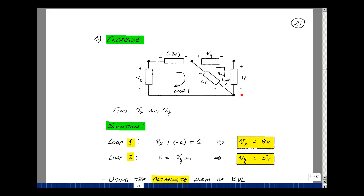Over on this loop, I know, again, two of the three. I have a drop of v sub y, a drop of 1, and a rise of 6. So 6 would be v_y plus 1. So v sub y is 5.